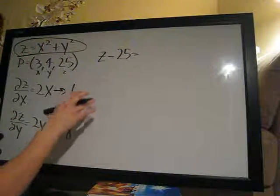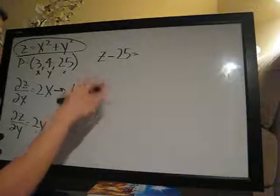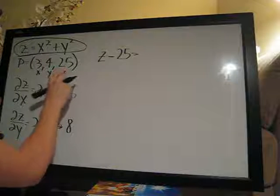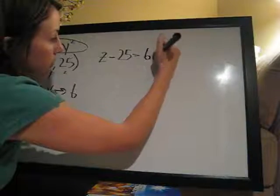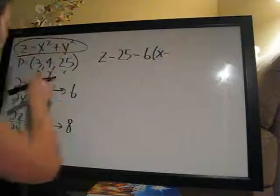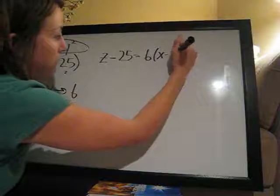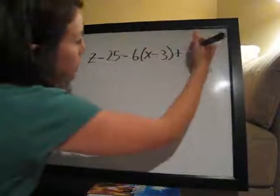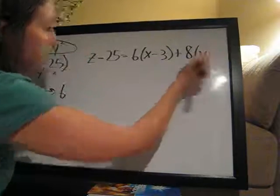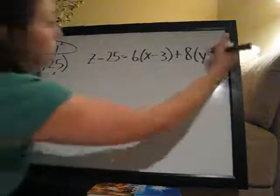And then we always plug things in the same spot. So the 25, the Z coordinate always goes here. Then we have slope in the X direction, which is 6, times X minus the X point, which is 3, plus the slope in the Y direction, 8, times Y minus the Y point, which is 4.